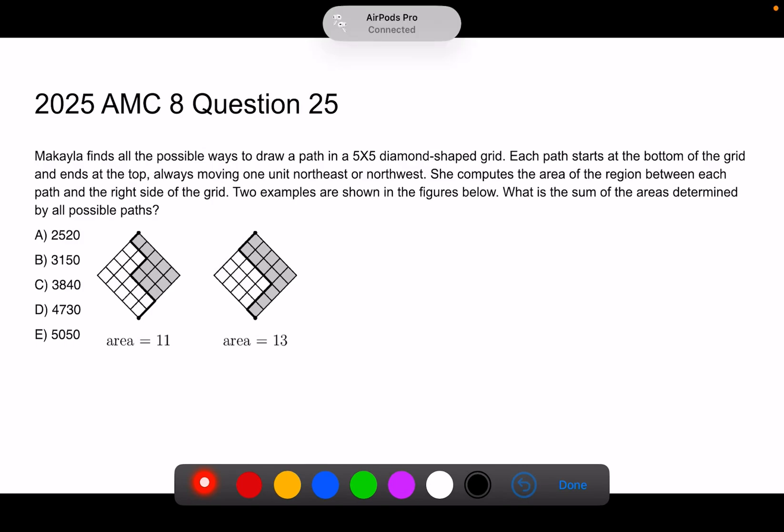AMC 8, question 25. Makila finds all the possible ways to draw a path in a 5x5 diamond-shaped grid.